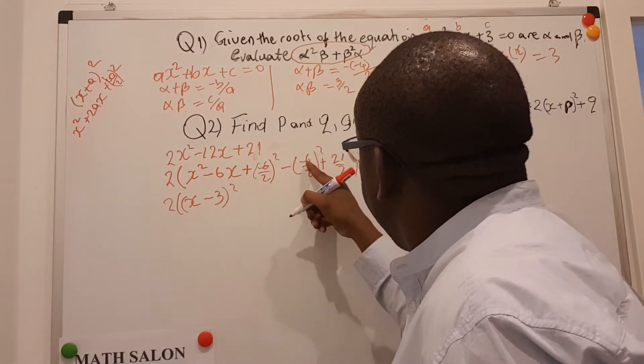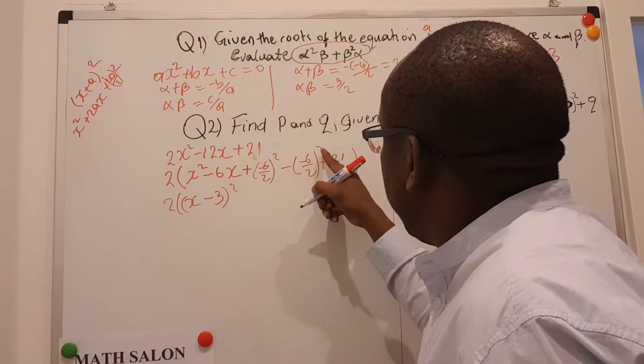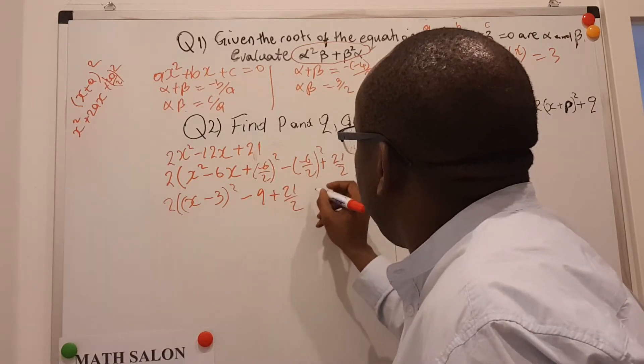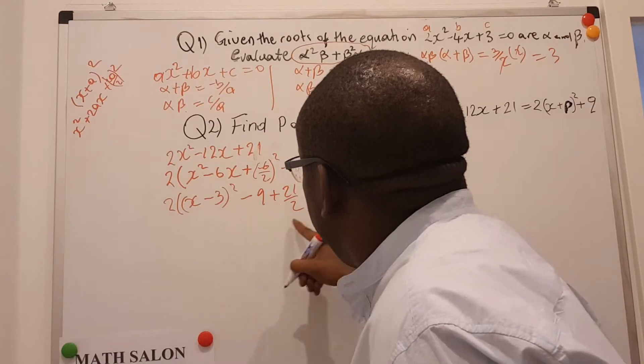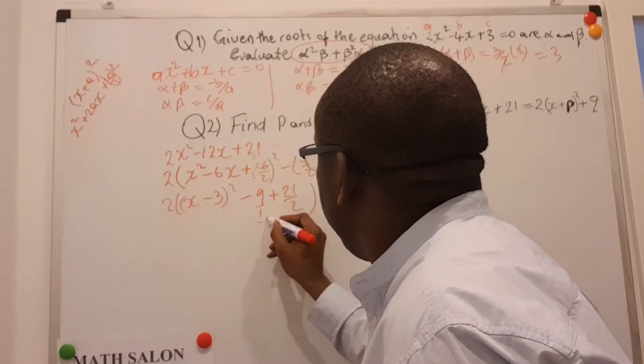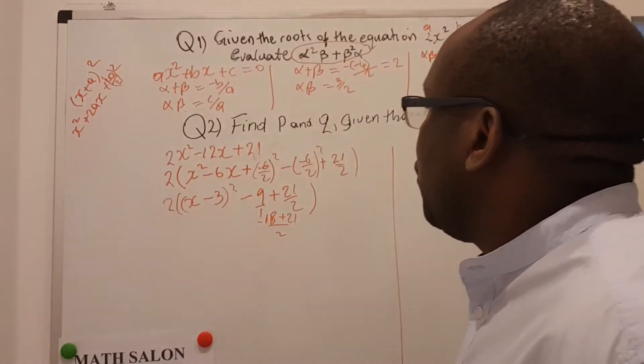And I have this here, minus 3 on 2, minus 6 on 2 is minus 3, minus 3 squared is 9, so I get here minus 9 plus 21 divided by 2. If I try to put this together, then this is like that on 1, this is 2 here, so this gives me minus 18 plus 21, and that gives me 3 on 2.